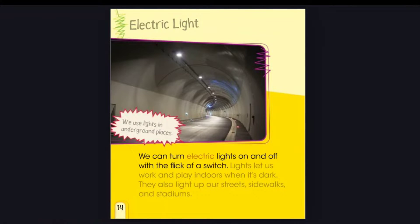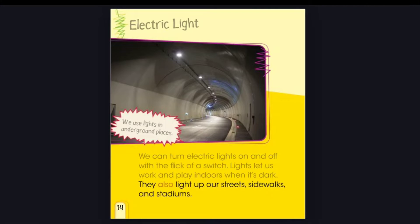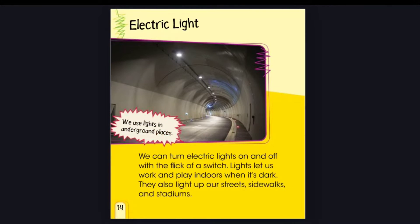Electric light. We can turn electric lights on and off with the flick of a switch. Lights let us work and play indoors when it's dark. They also light up our streets, sidewalks, and stadiums. We use lights in underground places.